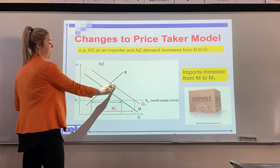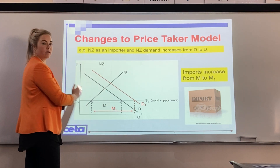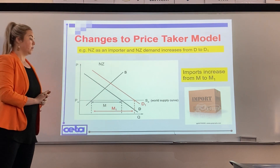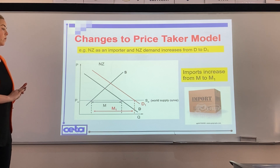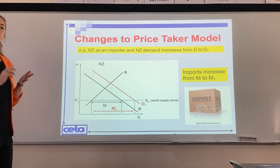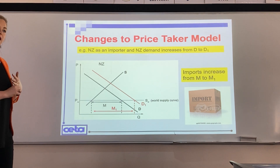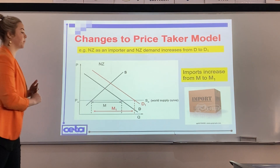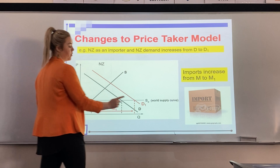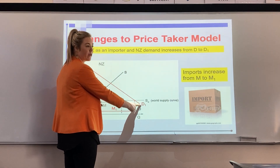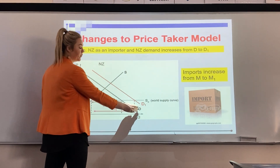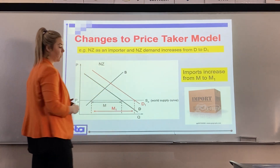To show a decrease, the curve would shift back to the left. Step one: shift your curves. Step two: always relabel your curves — so we've moved from D to D1.